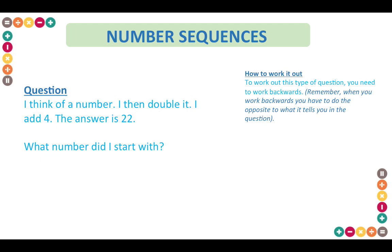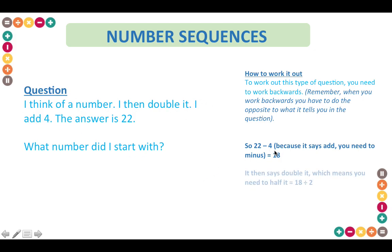We start with 22 because that's what we end up with, minus four because you need to minus as opposed to add. So 22 minus four gives you 18. Then it says double it, so this means you would have to half it instead. So 18 divided by two gives you the answer of nine.